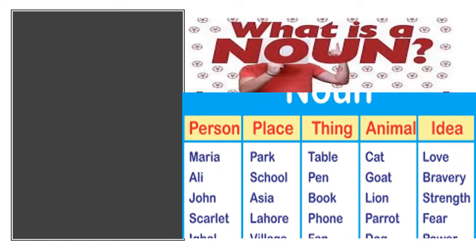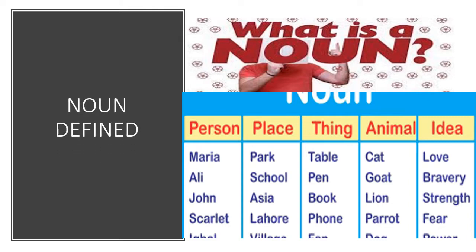A noun is a word that names a person, for example Maria; a place, for example a park; a thing like a pen; an animal like a cat; and lastly an idea like love.